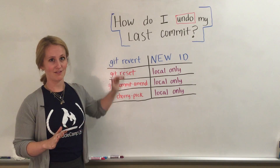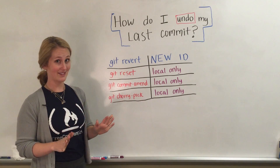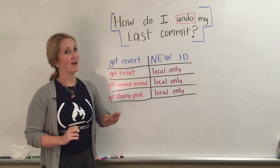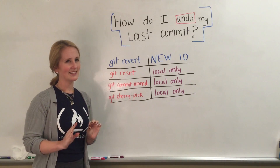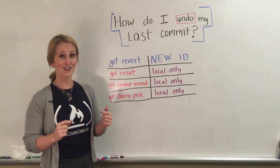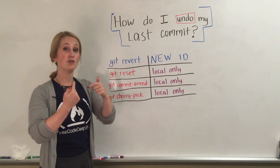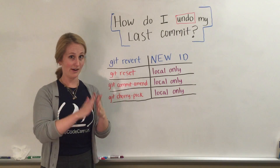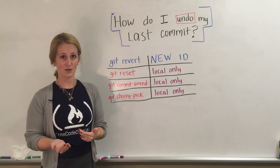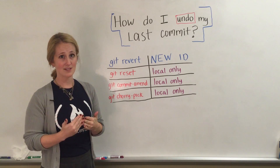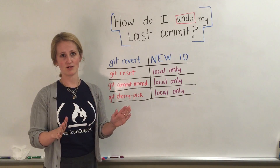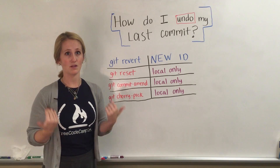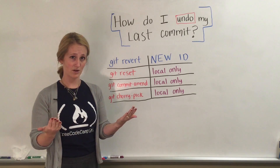My best suggestion for changing a commit in any way is to use git revert. When you revert, you're not technically undoing the commit. You're actually creating a new commit with the exact opposite changes of whichever commit you'd like to undo. This means the commit ID remains unchanged, so it's absolutely safe to do, even on commits that you've already pushed to the remote repository.